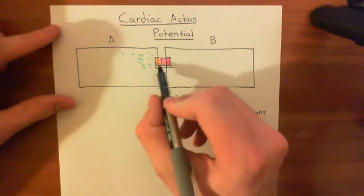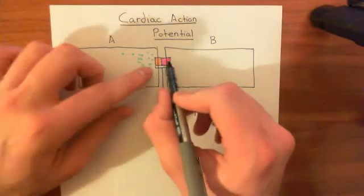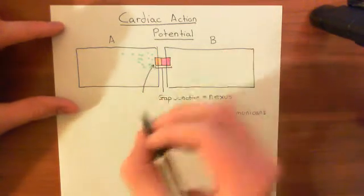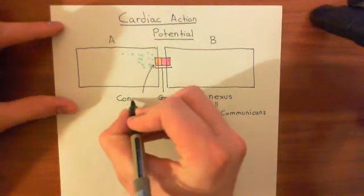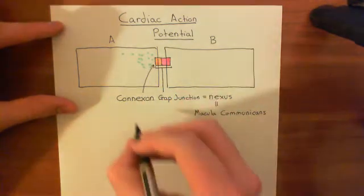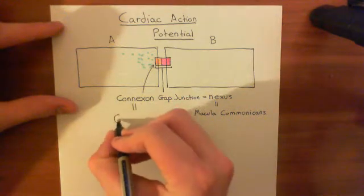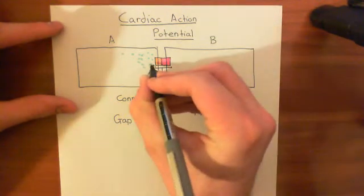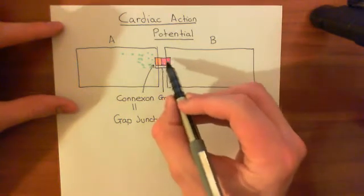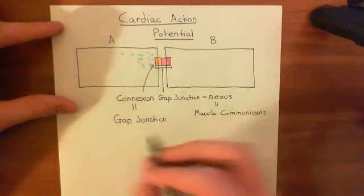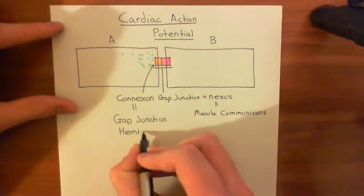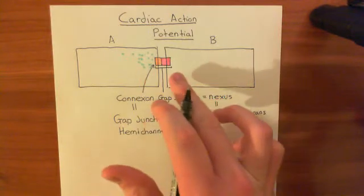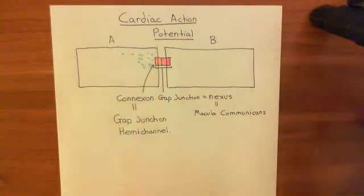These two half-channels — because the gap junction is made up of the dimerization of these two pieces, and each cardiomyocyte provides one of these pieces — are known as a connexon. The other name for a connexon is to call it a gap junction hemichannel, which is quite a sensible name, because the gap junction is effectively a channel between cardiomyocyte A and B. So each of these connexons, which have dimerized to become the full channel, is effectively a hemichannel, or a half channel. A gap junction, then, is effectively a tunnel between cardiomyocyte A and cardiomyocyte B.